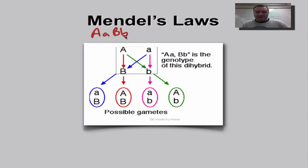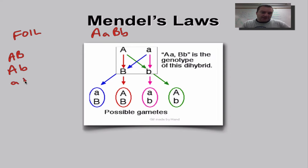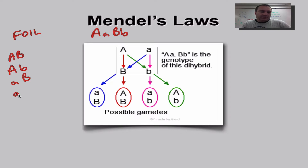When we want to make gametes — all the possible combinations — you're going to use FOIL. The first of each pair: big A, big B — that's the first kind of gamete. The O stands for the outside pair: big A, little b. The I stands for the inside pair: little a, big B. This is the only time we put a little letter in front of a big letter, because we've just put the A's in front of the B's. And the L stands for the last of each pair: little a, little b. Those are your four possible gametes.